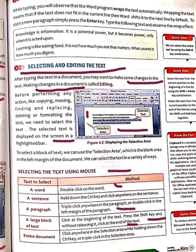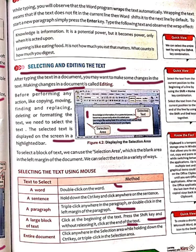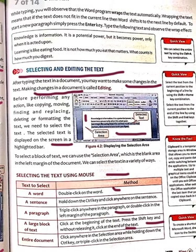To select the entire document, click anywhere in the selection area while holding down the Control key — that will select the whole entire document. There is one more way: triple-click in the selection area and your entire document will be selected. So either triple-click in the selection area or click anywhere in the selection area while holding down the Control key.